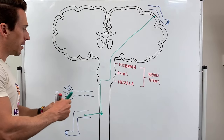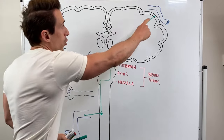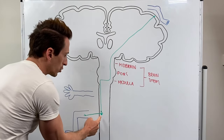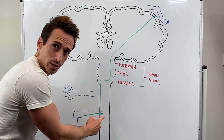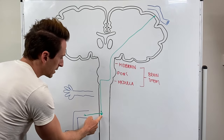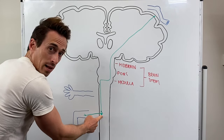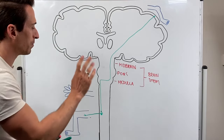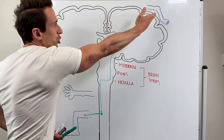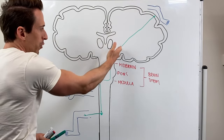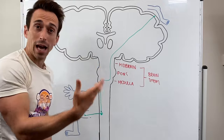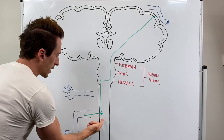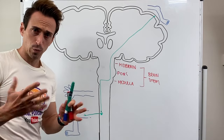You can see it's a two-neuron system. One neuron goes from the brain to the level at which it wants to exit, and the second neuron at that exit level goes to the muscle to tell it to contract. This first neuron is called the upper motor neuron, and this second neuron is called the lower motor neuron. Really important.